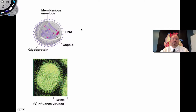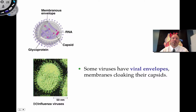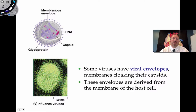Let me direct your attention to another video on viral structure, but let me briefly cover it. We have proteins called capsids that surround nucleic acid. Sometimes these capsids are also surrounded by a membranous envelope — a phospholipid bilayer with proteins embedded. The flu virus is an example of a membranous virus. Where does the membrane come from? It comes from the host they're replicating inside, so when they bud off, they incorporate that host cell membrane into their own membranous envelope.